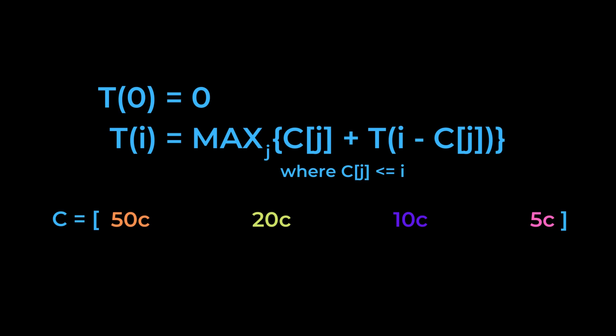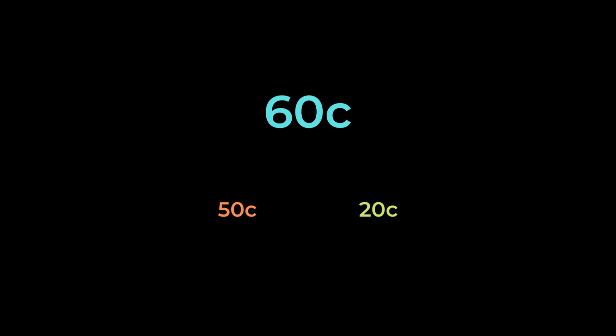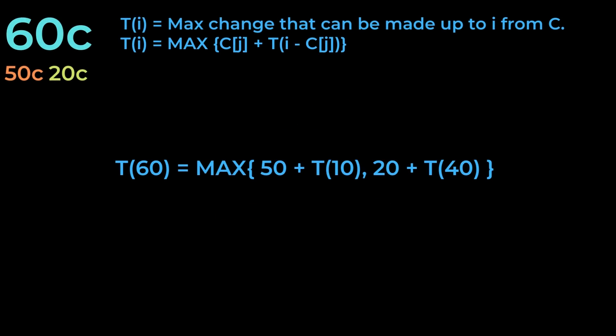To demonstrate this, let's take a look at the case that caused problems to the greedy method. At t of 60, there are two types of coins we can use, 50 and 20. With 50, the maximum change we're going to be able to make is 50, plus however much change we can make with 10. t of 10 is equal to 0, as this amount is less than 20 and 50, so we end up with 50 cents overall.